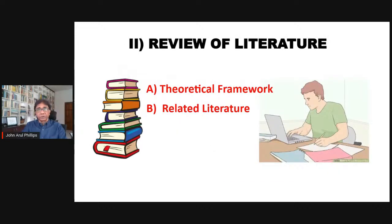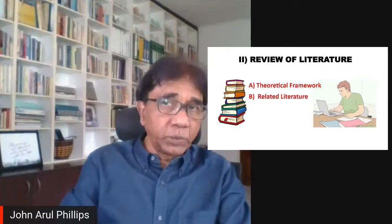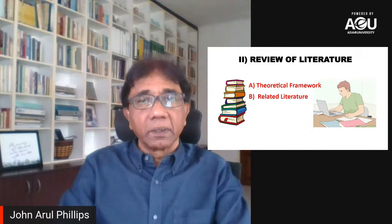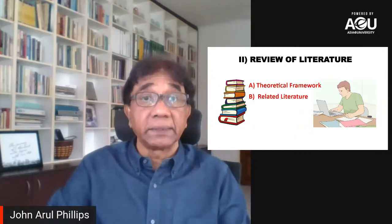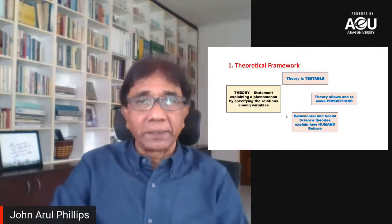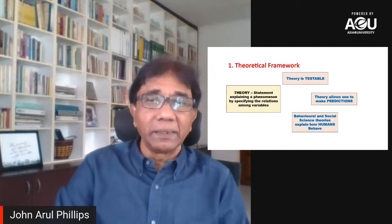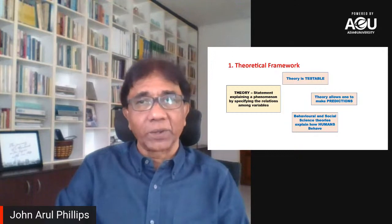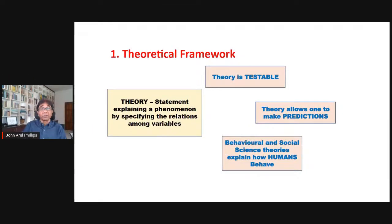The second section is the review of literature, which can be divided into two parts: the theoretical framework and the related literature. The theoretical framework is a very confusing concept for many doctoral students when they defend their proposal and are asked 'What is the theoretical foundation of your study?' If you explain it clearly in your research proposal, that problem is solved.